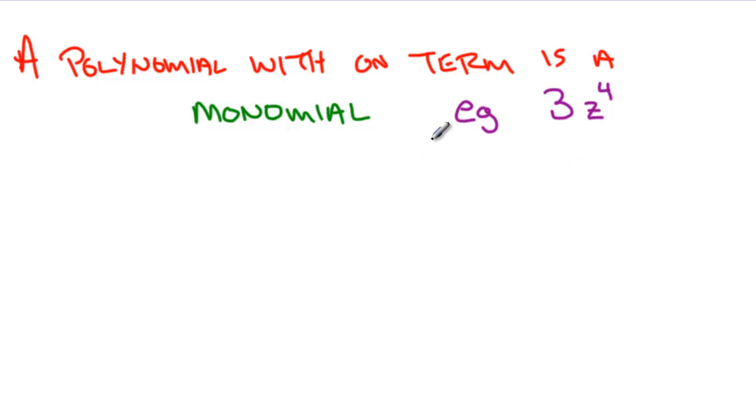When we have a polynomial with only one term, we call that polynomial a monomial. For example, 3z⁴. That's a single term polynomial. It has a special name. It's called a monomial.